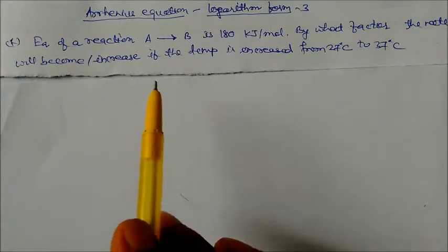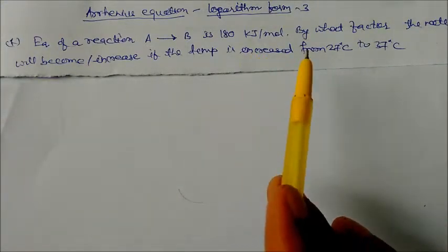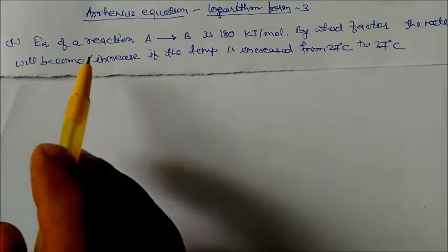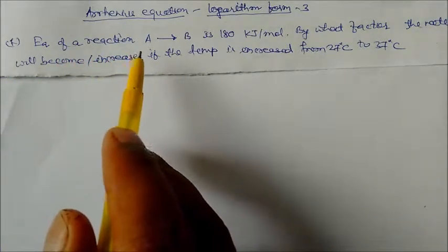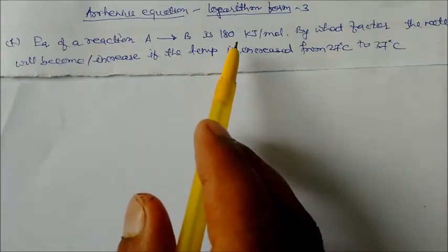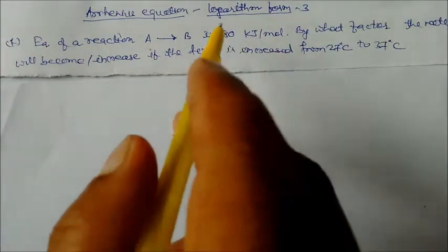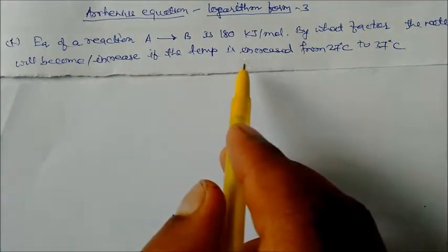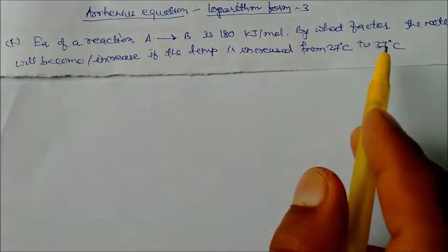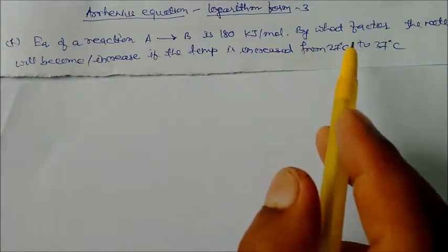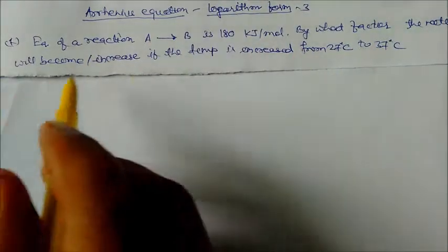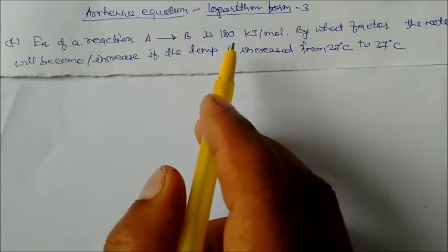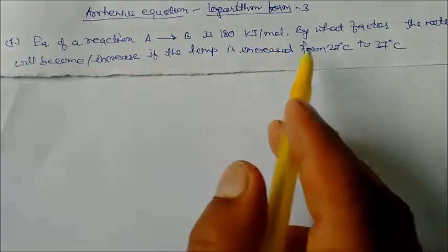Let us solve this problem. The activation energy EA of a reaction where A is converting to B is 180 kilojoule per mole. By what factor will the rate increase if the temperature is increased from 27 degree centigrade to 37 degree centigrade? We use the logarithm equation with the given activation energy.